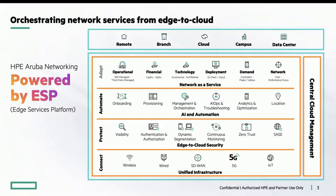Lastly, the Adapt layer describes the operational flexibility that we provide with various financing as well as professional services offerings, bundled together in a network-as-a-service SKU or product. All of these ESP layers are managed by our HPE Aruba Central cloud management platform, and all of these technologies support remote branch, cloud, campus, and data center settings for IT solutions.